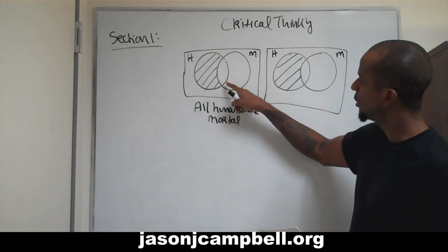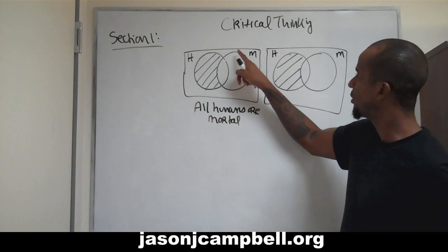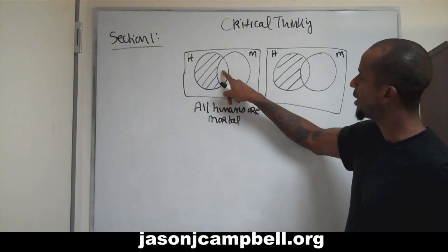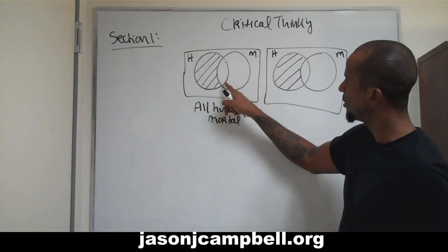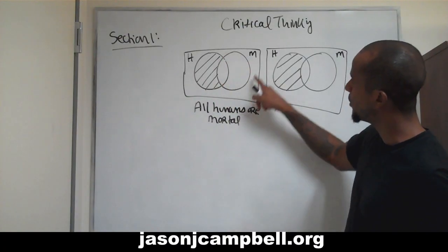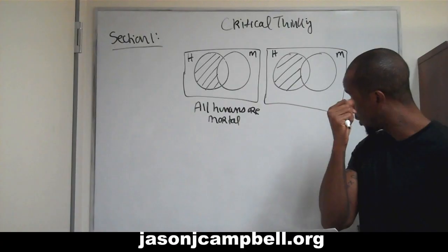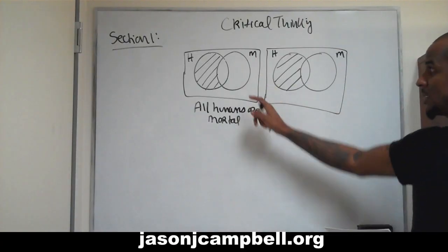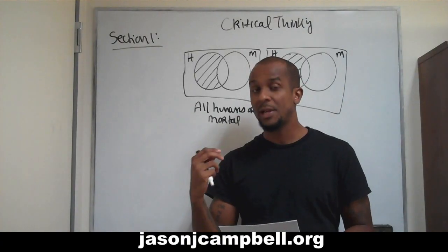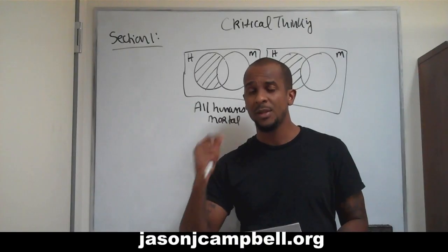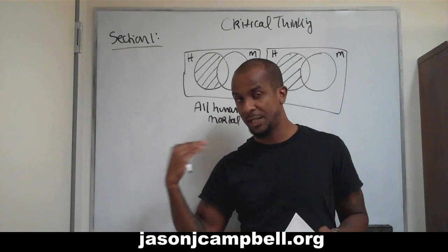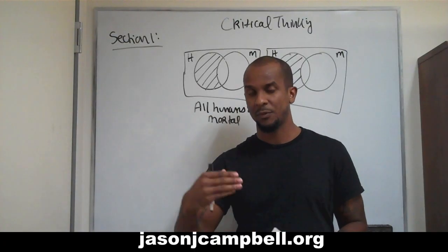The section for the circle — and I'm keeping this basic — the section for the circle contained for being mortal. So we can look at this and see that this section for humans is contained entirely within the section of being mortal. So 'all humans are mortal' is what this could represent. If that concept you've already found a little difficult, I do recommend you go back and watch the Venn diagrams, because you'll need at least that basic understanding in order for us to progress.